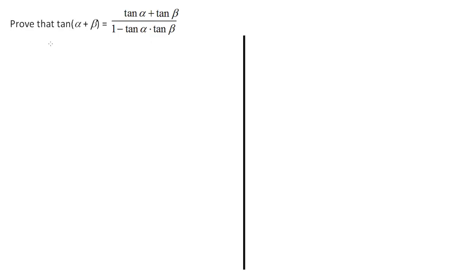We have a problem involving a proof: tan(α + β) = (tan α + tan β)/(1 − tan α · tan β). Whenever we do a proof, we must show that the left-hand side equals the right-hand side exactly. So the first thing we write is: LHS = tan(α + β).